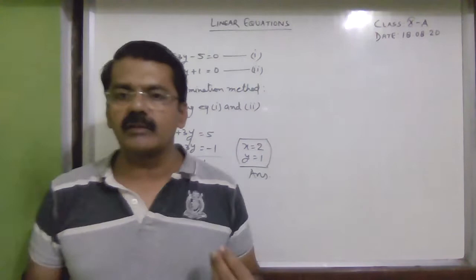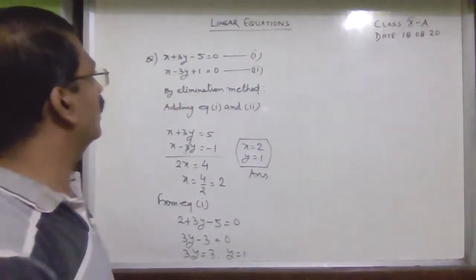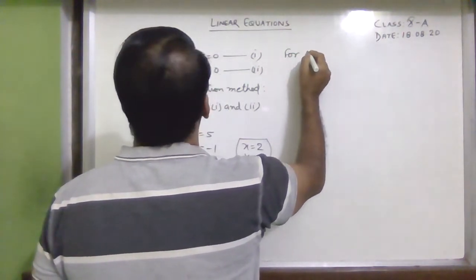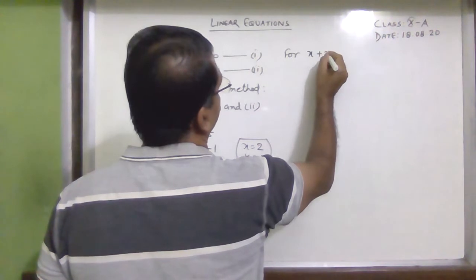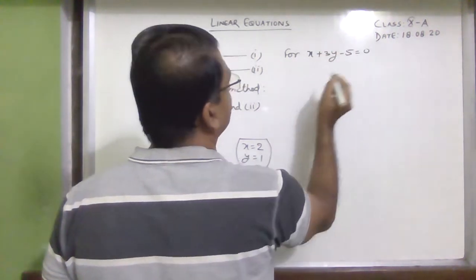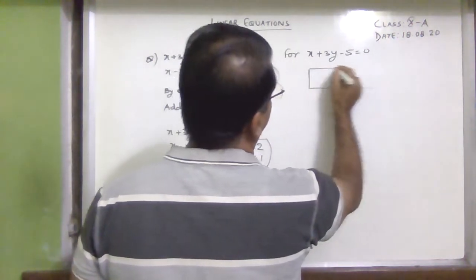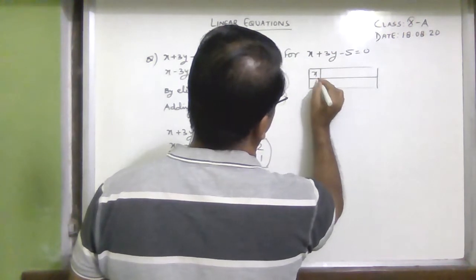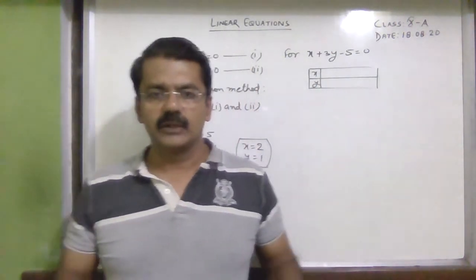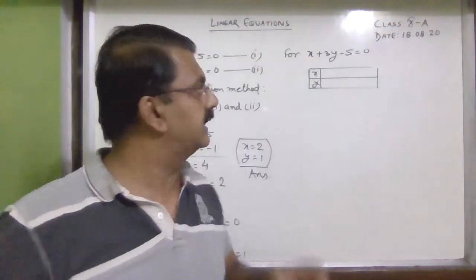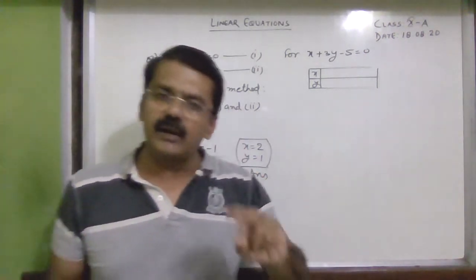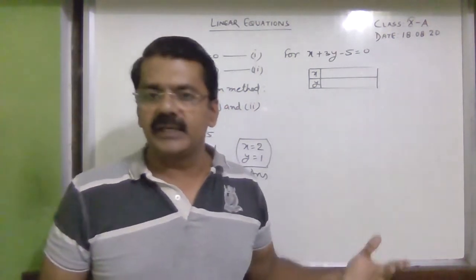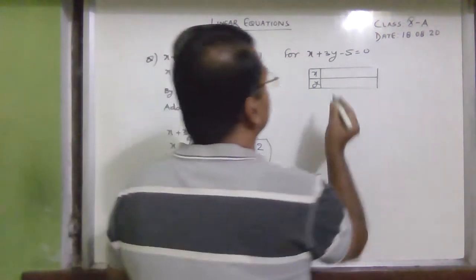Now I will tell you how to solve these two equations graphically. For the first equation, x + 3y − 5 = 0, we make a table. Since these are linear equations, their graphs will be straight lines. To draw a straight line only two points are sufficient, but to verify our work we will take three points.